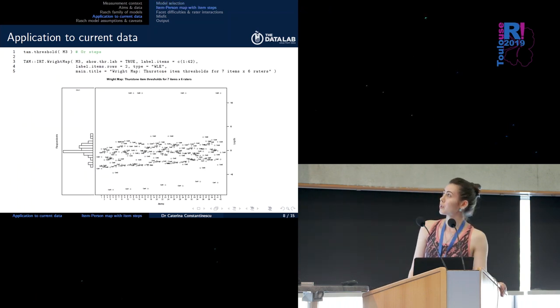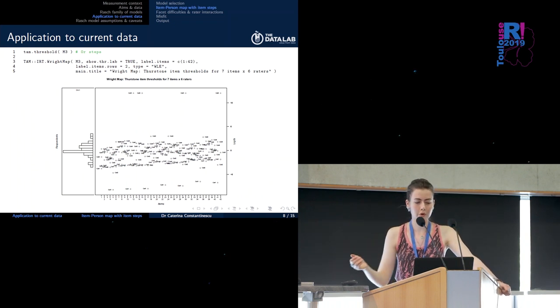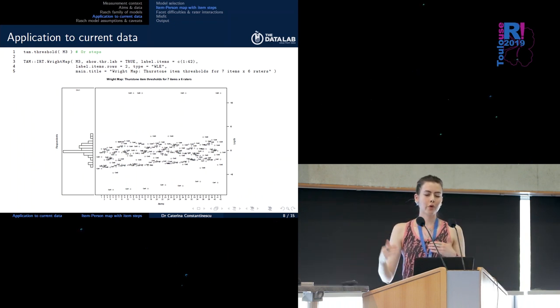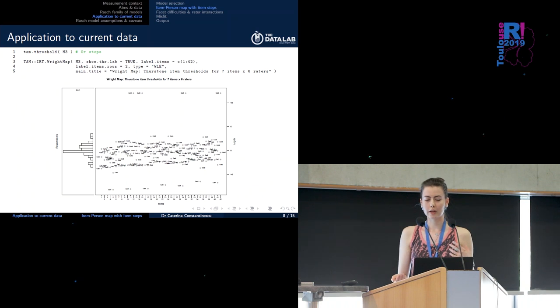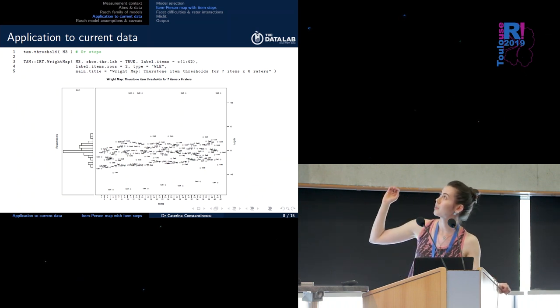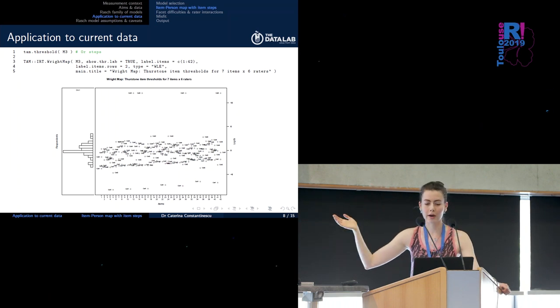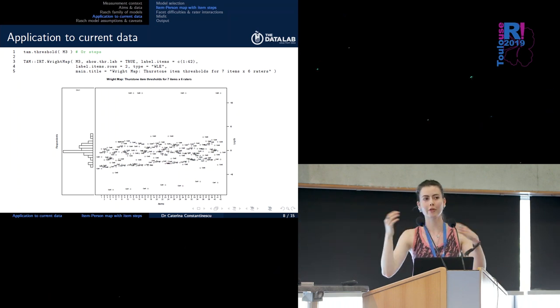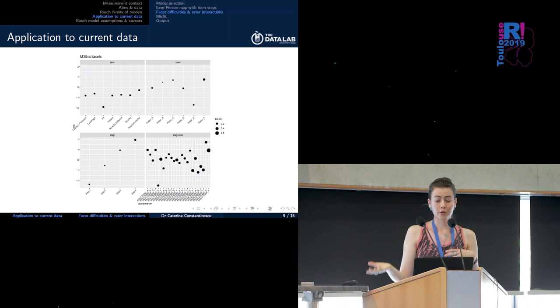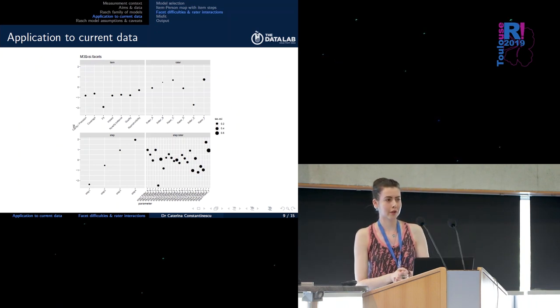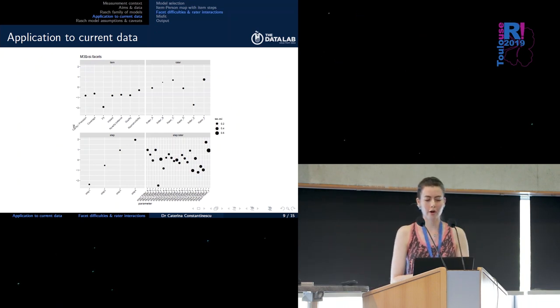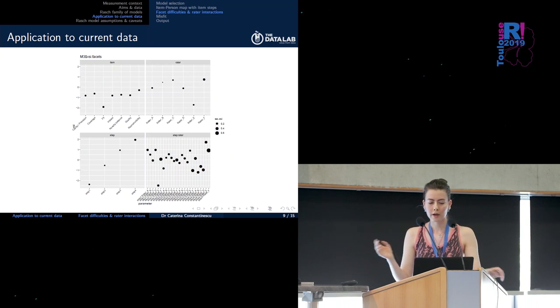So in terms of the results and how this model fit as you can see the distribution of person abilities is matched pretty well against how we calibrated the items with a few exceptions in terms of really difficult steps according to some items or really easy ones but overall there is a decent match in between the two. Other types of information you get from these types of models are difficulty scores for the actual items.